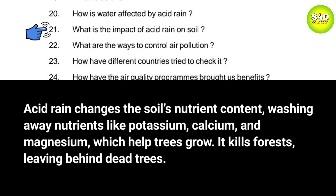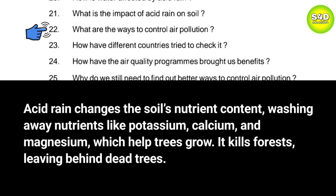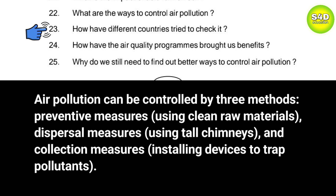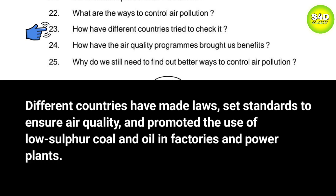Question 22: What are the ways to control air pollution? Answer: Air pollution can be controlled by three methods: preventive measures such as using clean raw materials; dispersal measures such as using tall chimneys; and collection measures such as installing devices to trap pollutants. Question 23: How have different countries tried to check it? Answer: Different countries have made laws, set standards to ensure air quality, and promoted the use of low-sulfur coal and oil in factories and power plants.